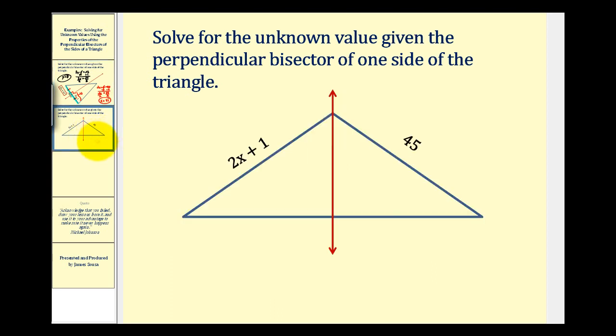Again we have a triangle and this red line is the perpendicular bisector of this side of the triangle. Now this problem is kind of a special case because notice how this perpendicular bisector also passes through the vertex that's opposite the side the line bisects.